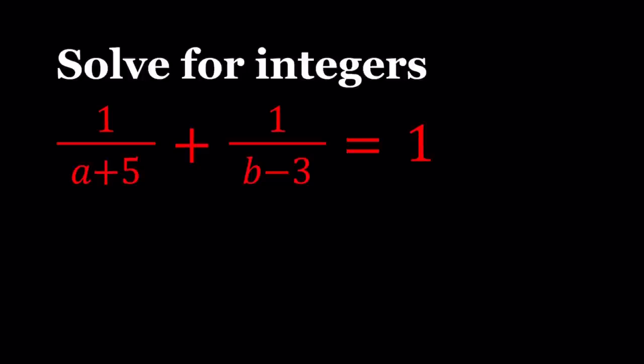Now first of all, notice that in this equation, since a plus 5 and b minus 3 are in the denominators, a cannot be negative 5 and b cannot be 3. So those are the only restrictions we have. Other than that, we're good.